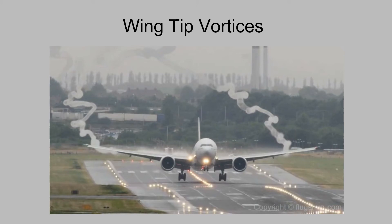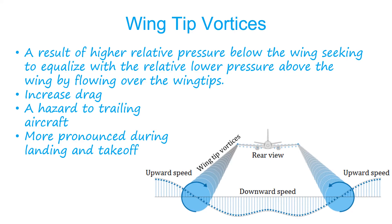Here you can see an example of wing tip vortices trailing behind an aircraft during landing. Wing tip vortices are caused by the higher air pressure below the wing flowing over the wing tip and then inboard along the top of the wing. They create additional drag and a hazard to smaller aircraft behind them. Wing tip vortices are most pronounced among larger jets flying at lower speeds with high lift coefficients, such as when taking off or landing.